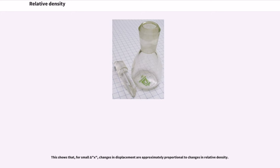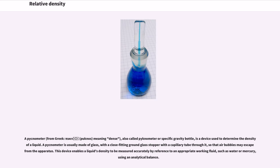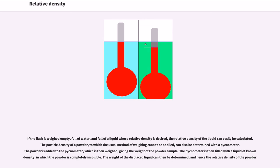A pycnometer (from Greek pyknos, meaning dense), also called a specific gravity bottle, is a device used to determine the density of a liquid. It is usually made of glass with a close-fitting ground glass stopper with a capillary tube through it, so that air bubbles may escape. If the flask is weighed empty, full of water, and full of a liquid whose relative density is desired, the relative density of the liquid can easily be calculated. The particle density of a powder can also be determined with the pycnometer: the powder is added, the pycnometer weighed, then filled with a liquid of known density in which the powder is completely insoluble, and the weight of the displaced liquid determined to yield the relative density of the powder.